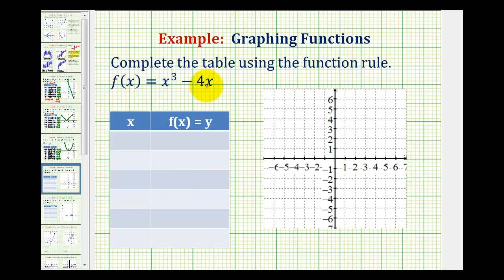We want to complete a table of values for the function f(x) = x³ - 4x, and then use the information from the table to graph the function. When we're given a function like this, if it's helpful, we can replace f(x) with y, so we can write this as y = x³ - 4x.